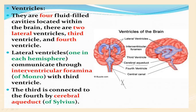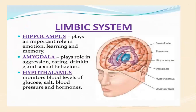The lateral ventricles — one in each hemisphere — communicate through the interventricular foramen of Monroe. There are four fluid-filled cavities, all filled with cerebrospinal fluid, located within the brain: two lateral ventricles, and the third and fourth ventricles.